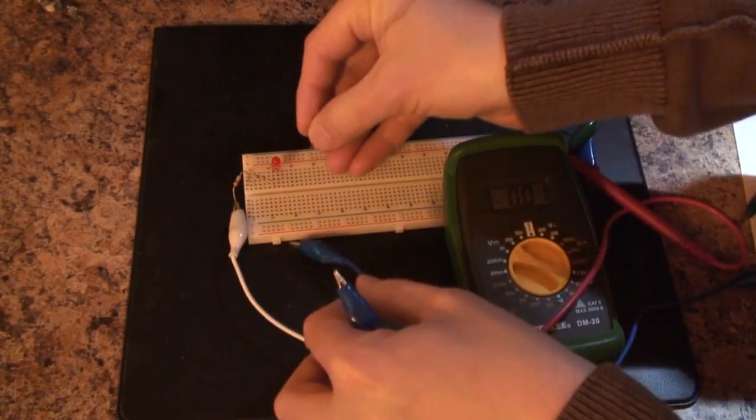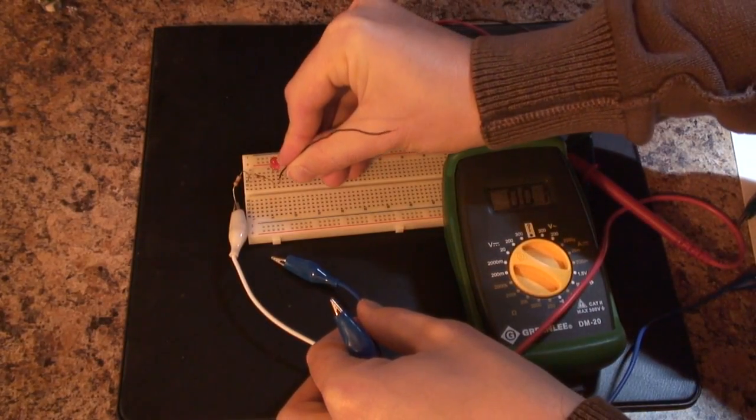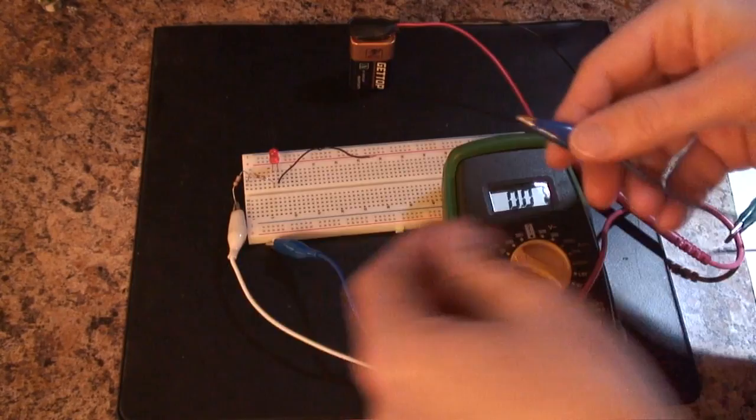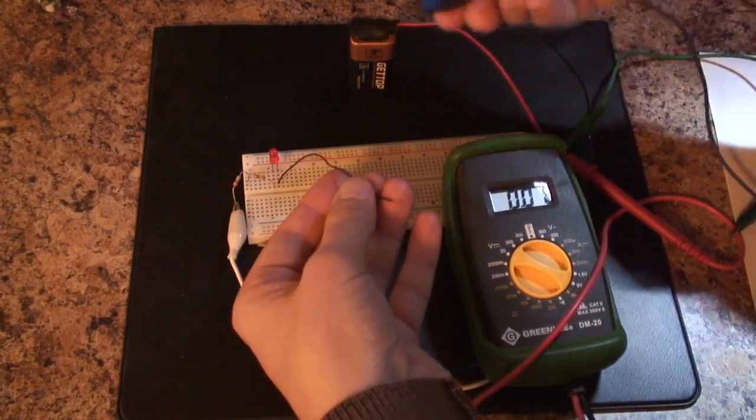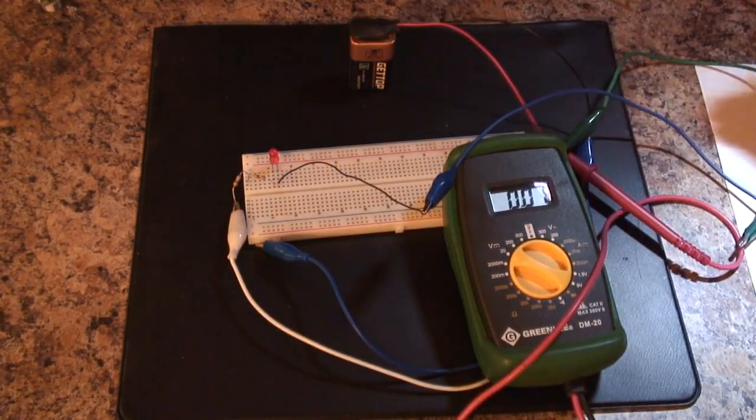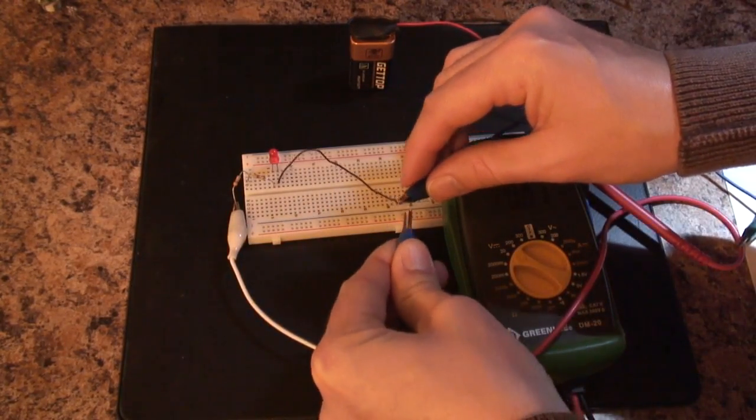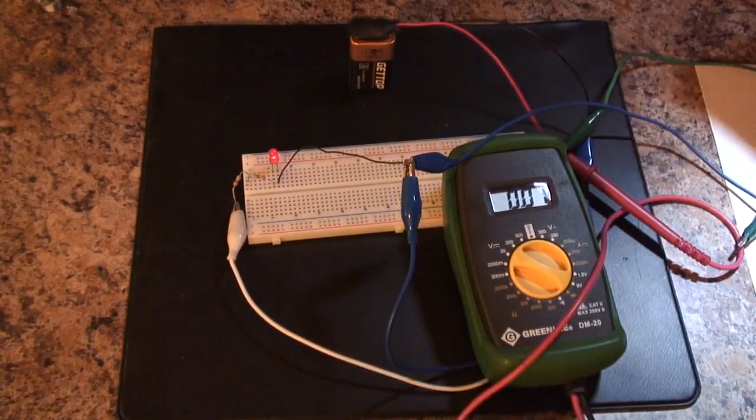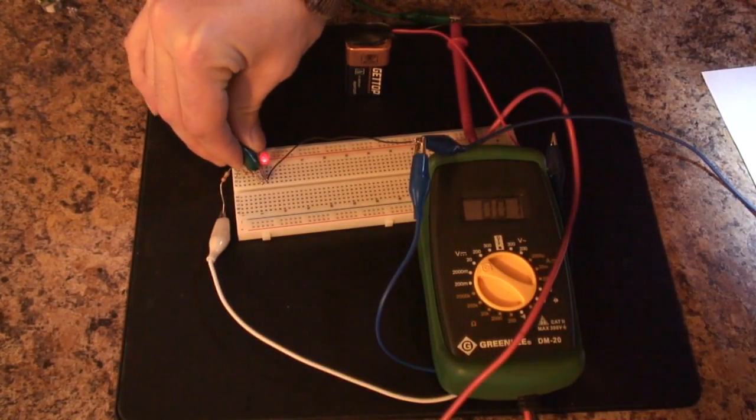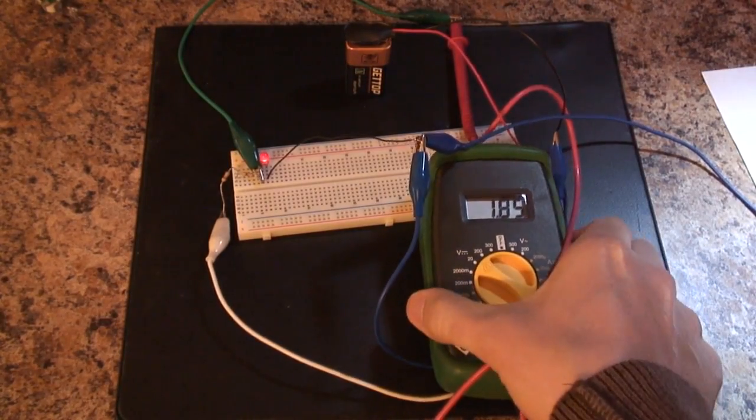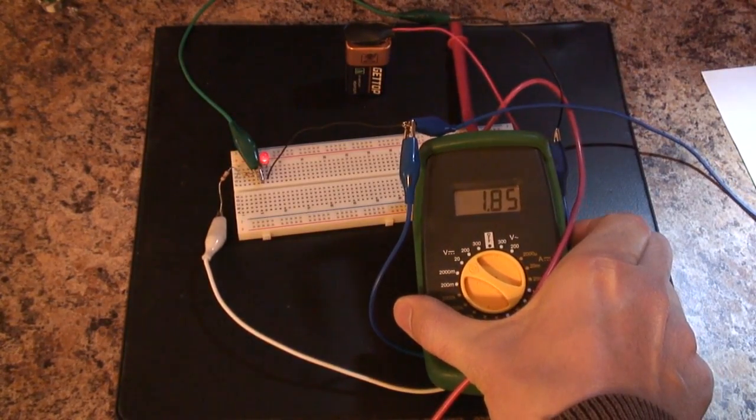To make this easier, I'm going to tap into the negative side of the LED using a cable. So the voltage across the LED is 1.85 volts.